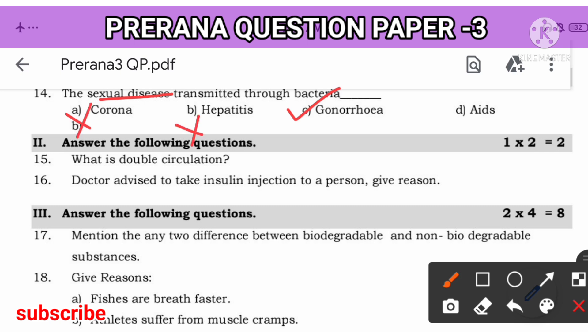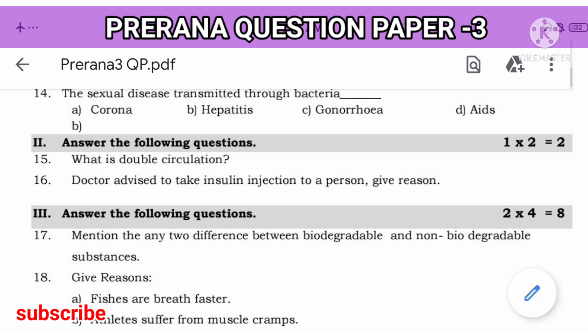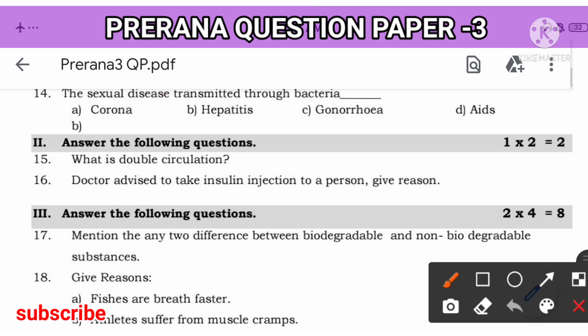When it comes to sexual disease, corona is not sexual. Hepatitis is also not. Gonorrhea and AIDS are both sexually transmitted diseases. Among them, AIDS is transmitted through virus. Gonorrhea, bacteria is transmitted. Question is asking, bacteria. So, right answer is gonorrhea.